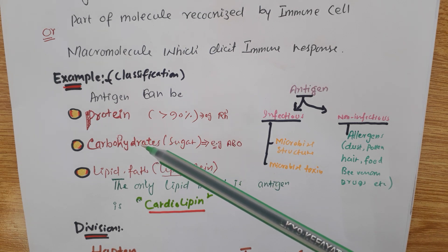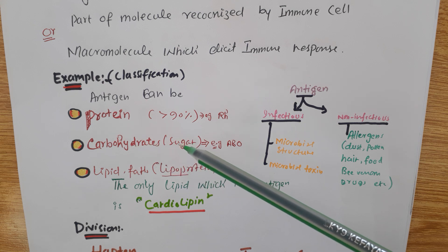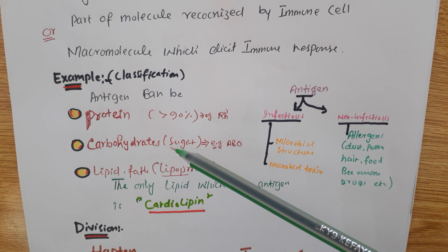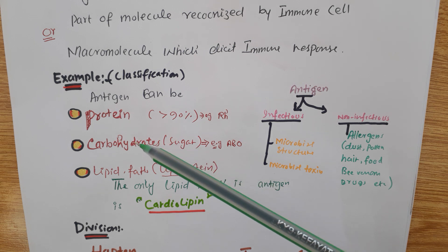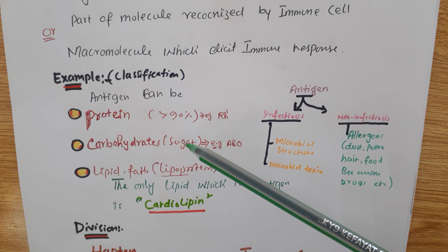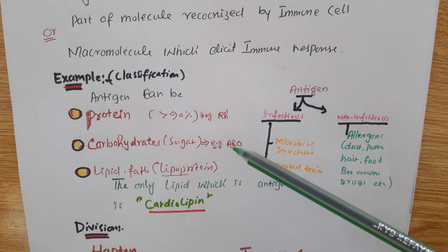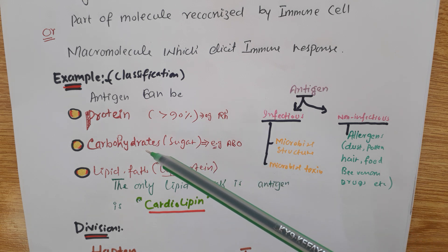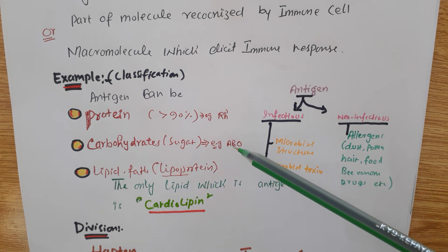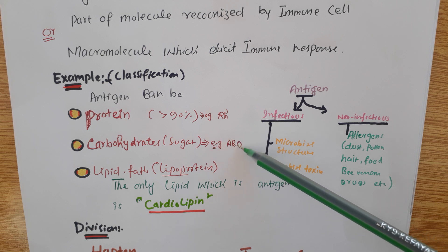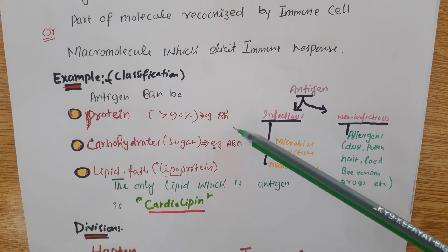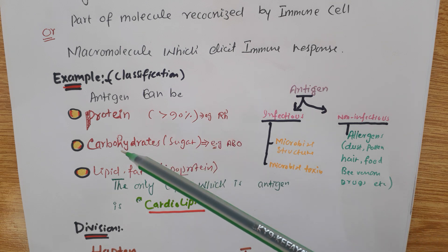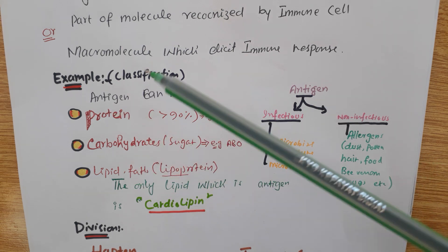We do have antigens that are carbohydrates. Carbohydrates mean sugar and can also be called saccharides. In the ABO blood group system — blood group A, blood group B — antigen A and antigen B are what we call carbohydrates or sugar. So the antigens of the ABO blood group system are carbohydrates, and Rh antigens are proteins.